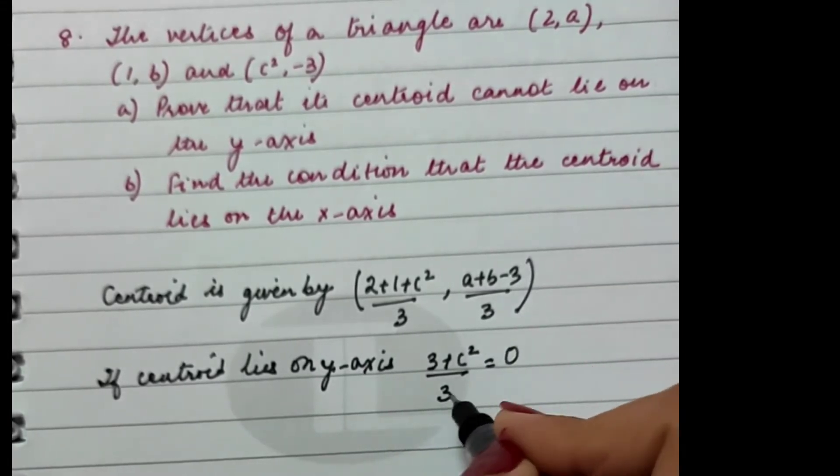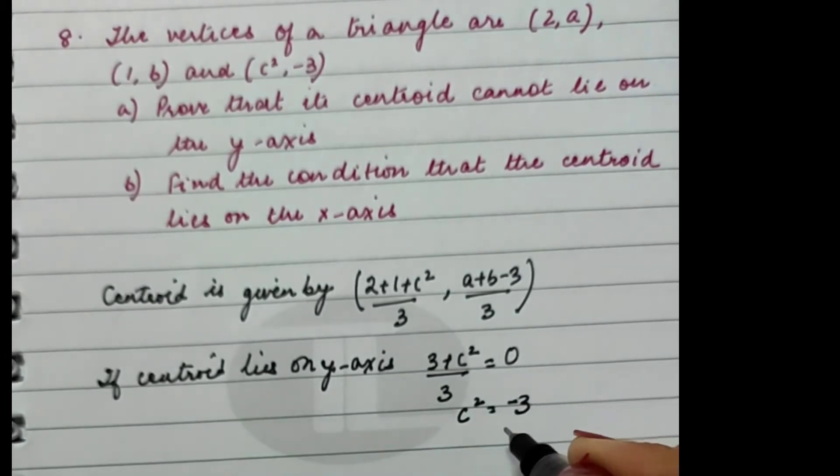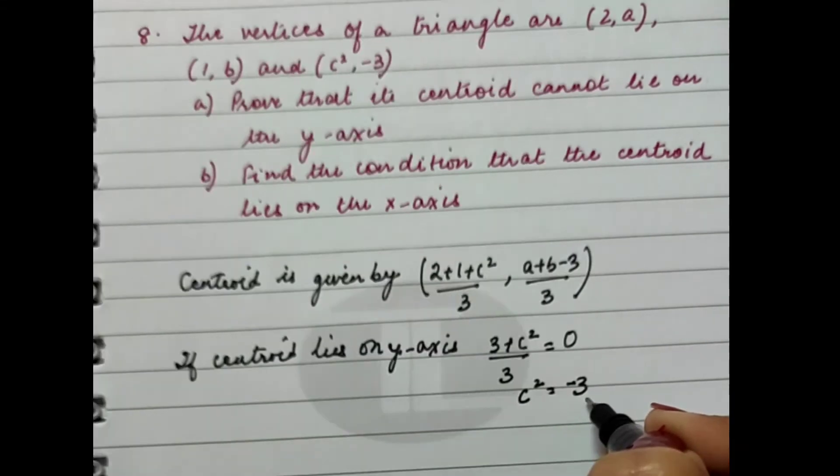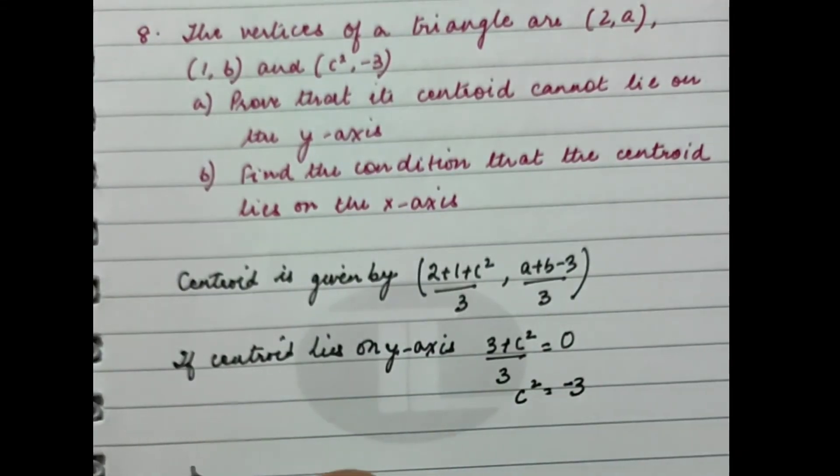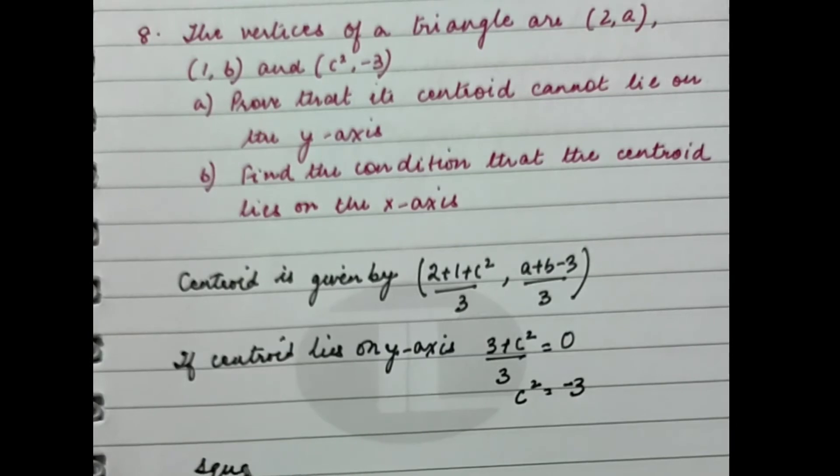That means c² is equal to -3. Is it possible that the square of any number is a negative number? This is not possible. The square of a number cannot be negative.